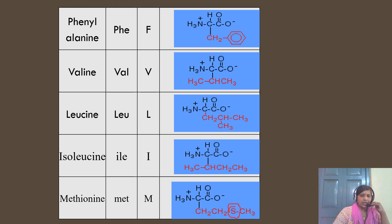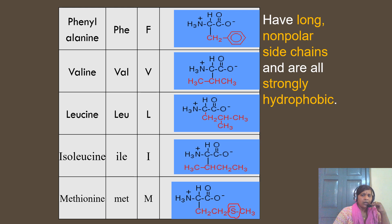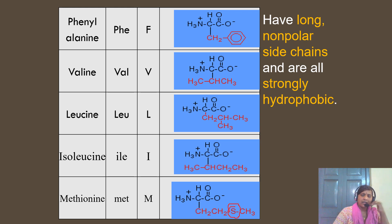So in the non-polar group there are eight amino acids: glycine, alanine, proline, phenylalanine, valine, leucine, isoleucine, and methionine. Glycine is the simplest with only hydrogen in its side chain. Alanine has CH3, and proline has an imino group. Phenylalanine, valine, leucine, isoleucine, and methionine all have long non-polar side chains and hence are all strongly hydrophobic.